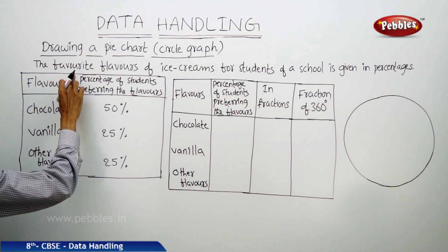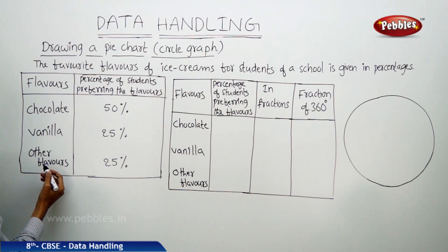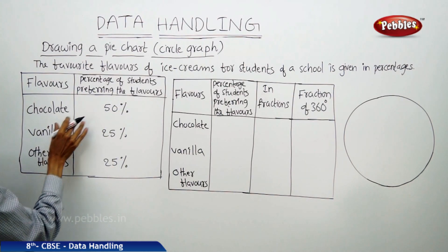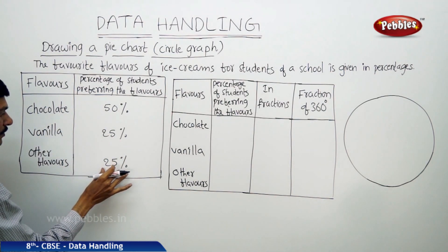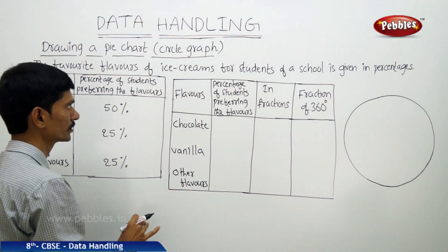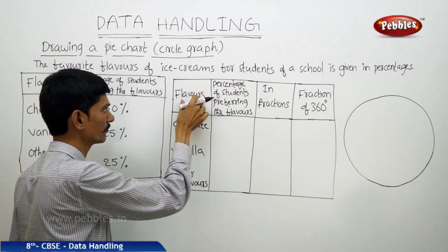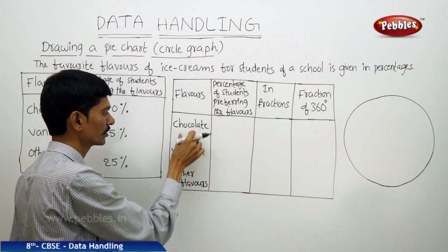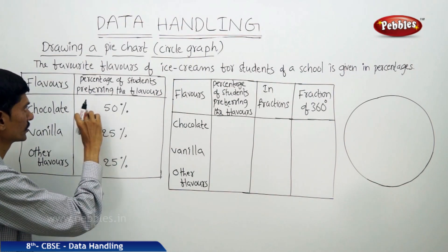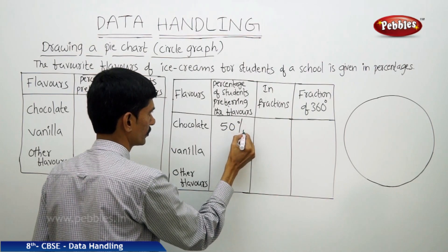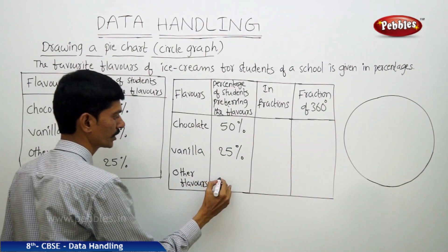The question gives the favourite flavours of ice cream for students of a school in percentages. The flavours are chocolate, vanilla, and other flavours. 50% of students prefer chocolate, 25% prefer vanilla, and 25% prefer other flavours. We will draw a table to find the proportion of each sector representing these flavours.